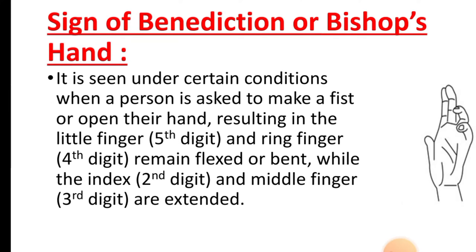Sign of benediction, also called bishop sign: when a person with a median nerve injury is asked to make a fist, they will produce the sign of benediction instead. It occurs when a person is asked to make a fist — the little finger (fifth digit) and ring finger (fourth digit) remain flexed, while the index finger (second digit) and middle finger (third digit) are extended. Here is the sign of benediction.